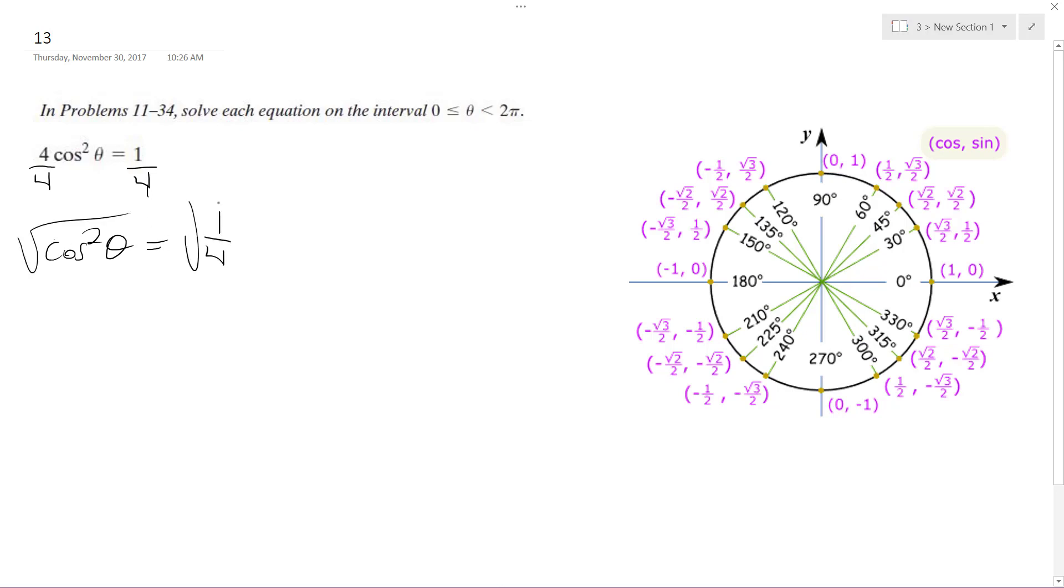Take the square root of both sides. I end up with cosine theta is equal to plus or minus 1 over 2.